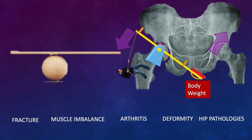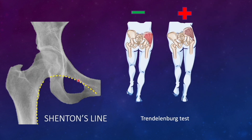Any failure in a component of the abductor mechanism can result in abductor mechanism failure. This includes fracture of the proximal femur (failure of the fulcrum), muscle imbalance (poor muscle pull), arthritis (reduced/painful motion), or any deformity hindering normal hip motion. The Shenton line represents the bony component of the abductor mechanism — any fracture or dislocation in this area disrupts the Shenton line and results in a positive Trendelenburg test.